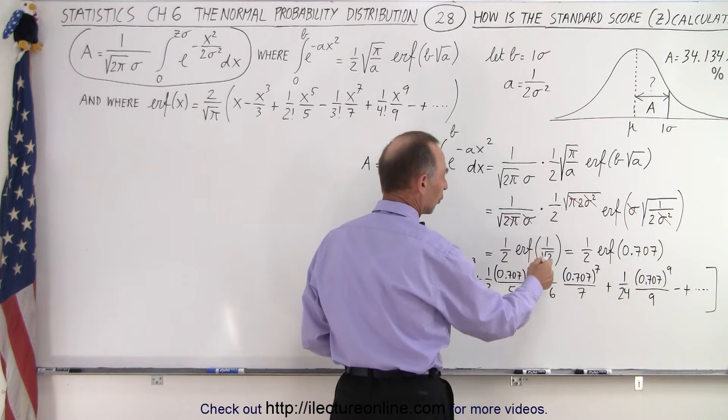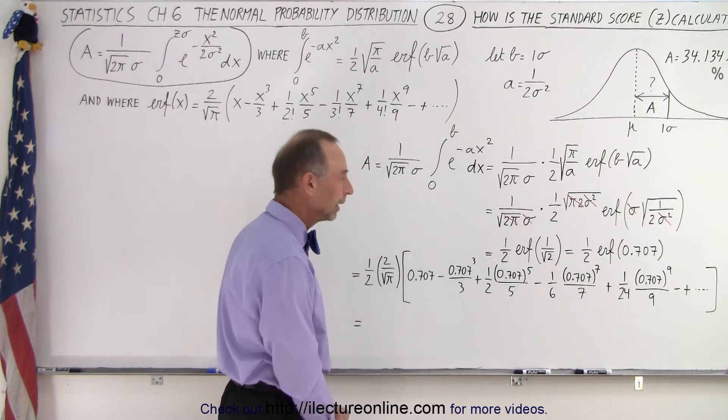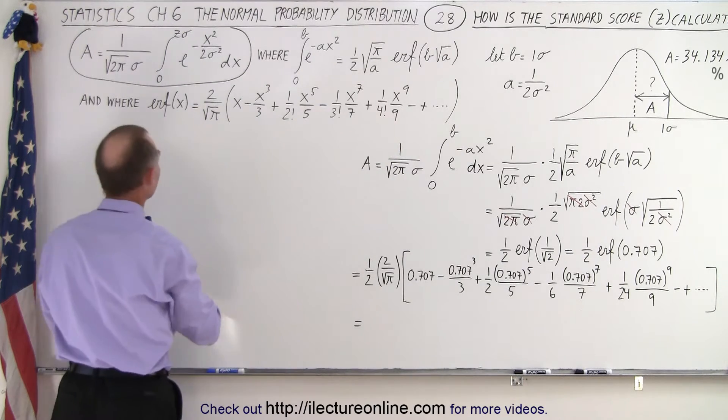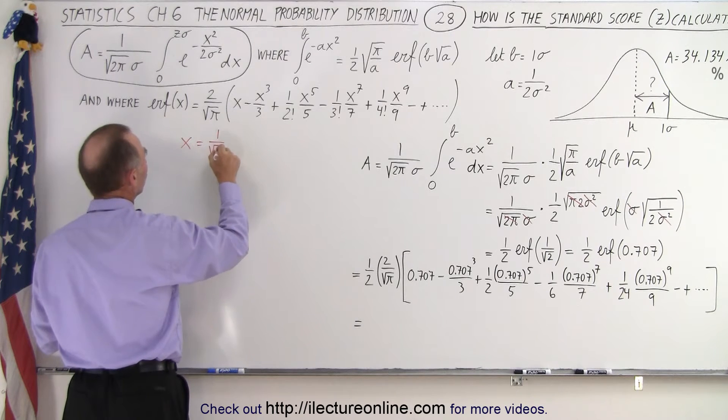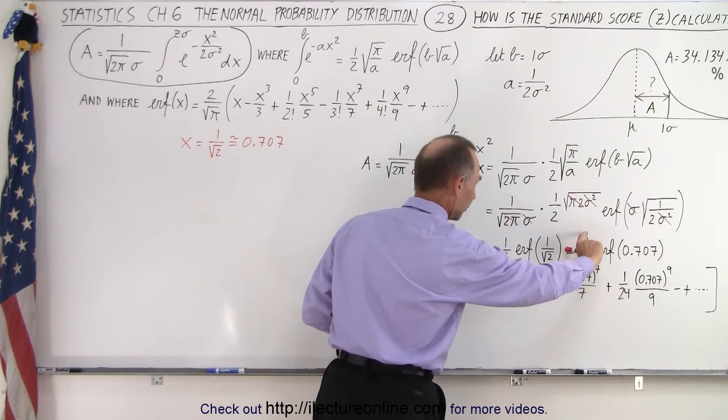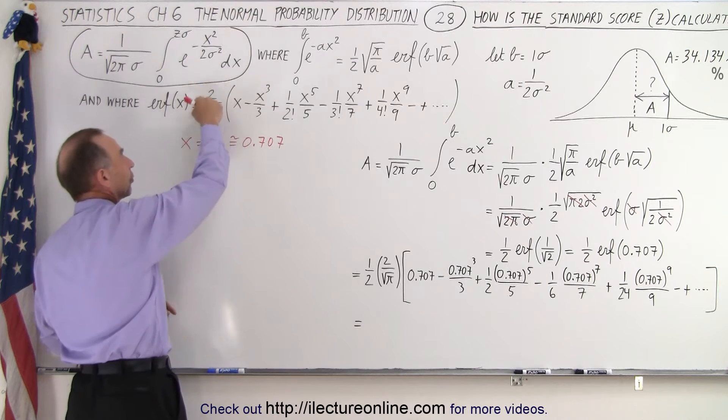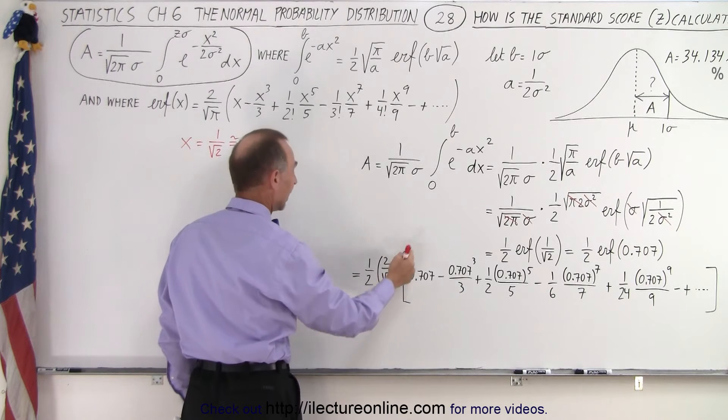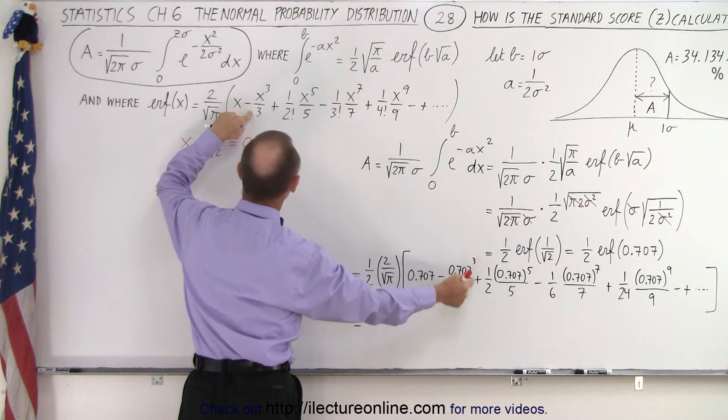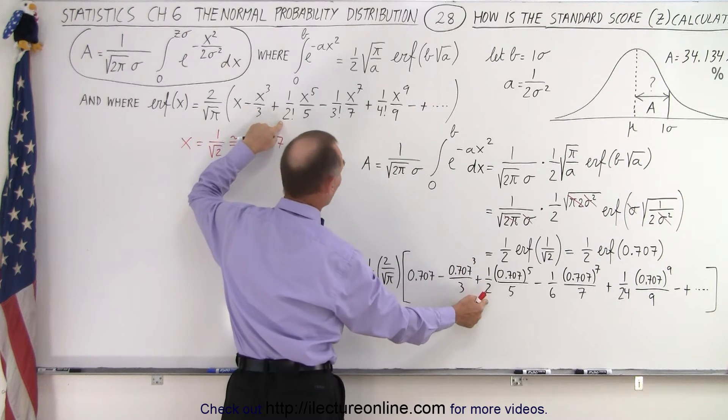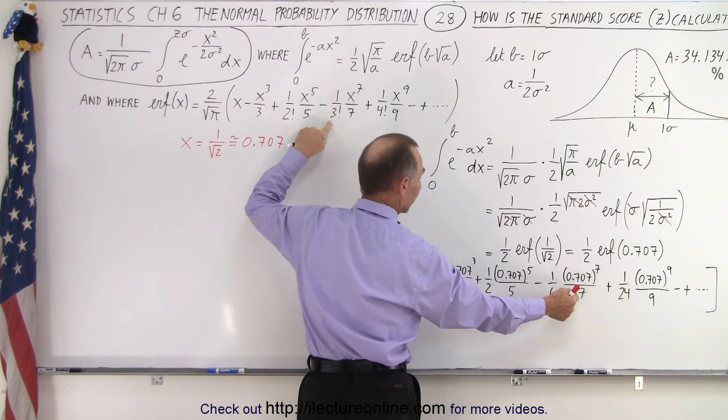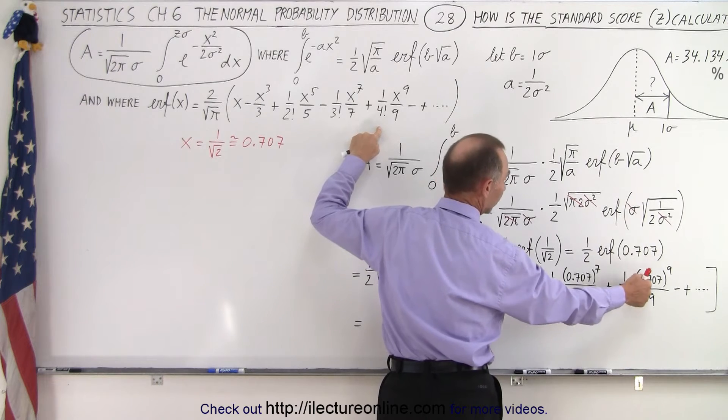So now we have to evaluate this, and of course 1 over the square root of 2 is approximately 0.707. And then if we then apply this to our general expression of our error function, in this case remember that x is now represented by 1 over the square root of 2, which is approximately 0.707. So we make that substitution for x. And so remember, we still have the 1 half in front, right here, 1 half times the error function, so 1 half times the error function, which includes this term right here, 2 over the square root of π, I should say, times x, which is now 0.707, or essentially 1 over the square root of 2, minus 0.707 cubed over 3, plus 1 over 2 factorial, which is 1 half, times 0.707 to the fifth over 5, minus 1 over 3 factorial, which is 1 sixth, times 0.707 to the seventh over 7, plus 1 over 4 factorial, which is 1 over 24, times 0.707 to the 9 over 9, and so forth.